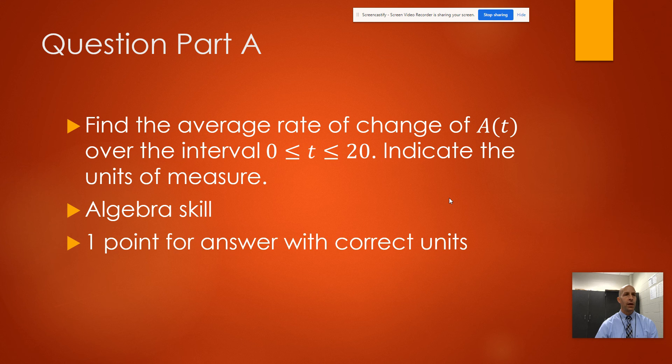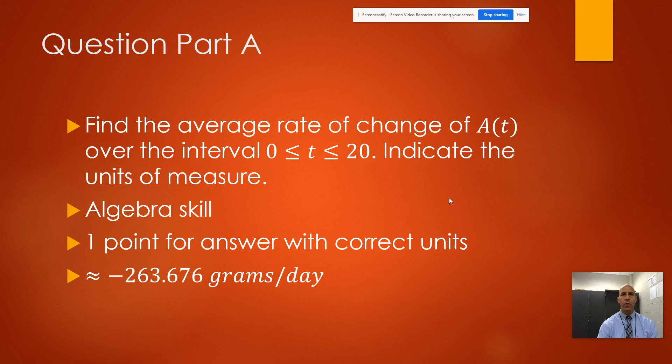This is a one-point question with the correct units. You would use your graphing calculator to plug A(t) into your Y1, then calculate A(20) minus A(0) over 20 minus 0. It turns out to be negative 263.676 grams per day. In other words, on average that's how much weight in grams is decomposing from the snake each day.